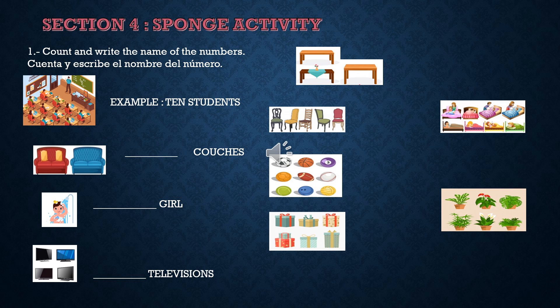Section 4. Sponge Activity. Count and write the name of the number and the object. Cuenta y escribe el nombre del número y del objeto. Example: ten students, two couches, one girl, four televisions. Tables, chairs, beds, bowls, boxes, plants. Ahora sigues tú.